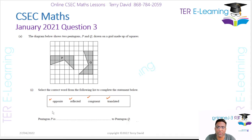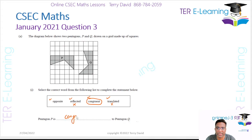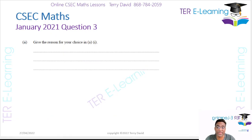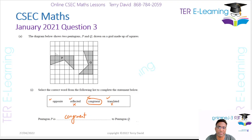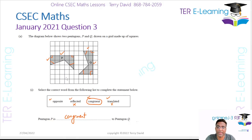The options are: opposite, reflected, congruent, and translated. It cannot be reflected because one is not a mirror image of the other — we can't find a clear mirror line. Translated is wrong because when we perform a translation the object is not rotated in any way. The only one that actually makes sense here is congruent. For shapes to be congruent they have to be identical.